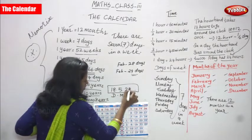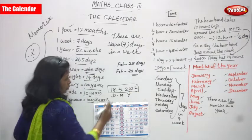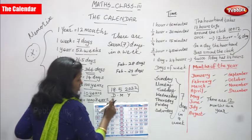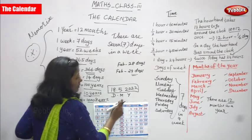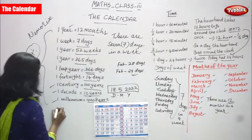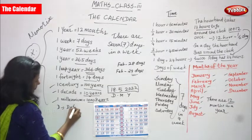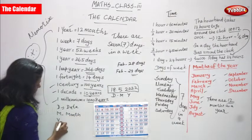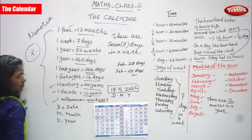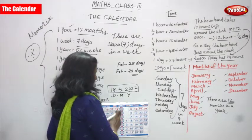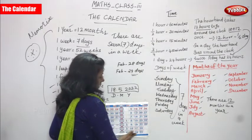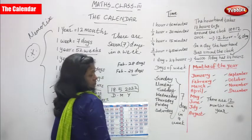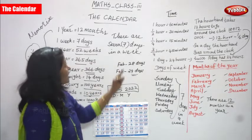You can write the date like this: 18.5.2022. Here 18 is the date, D stands for date, M stands for month, and Y stands for year. I think you understand. What is the next month after May? June. How many days does June month have? 30 days. So these are the basic concepts of the calendar.